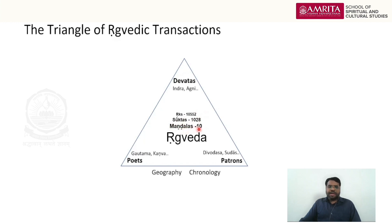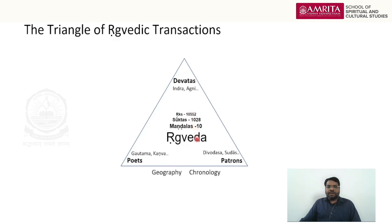So 10 Mandalas, each Mandala having Suktas, and each Sukta having Riks — this is the threefold structure of the Rig Veda. There are different other structures, but for clarity and simplicity we use this one: Mandala, Sukta, and Rik — or at the book level, poem level, and stanza level. Our subject — the geography and chronology of Rig Veda — is not directly visible in the Rig Veda.